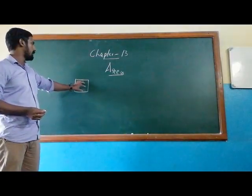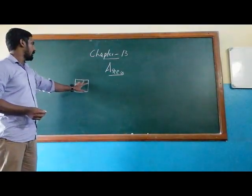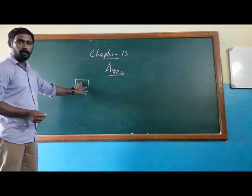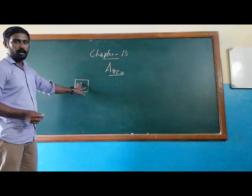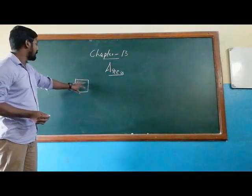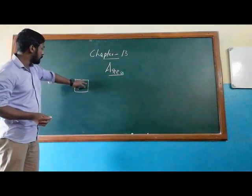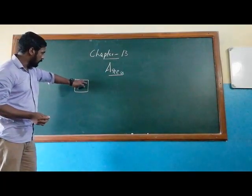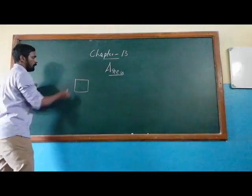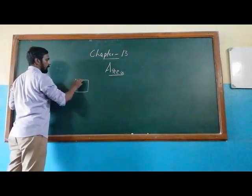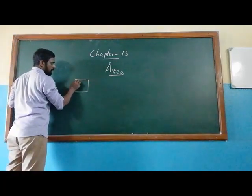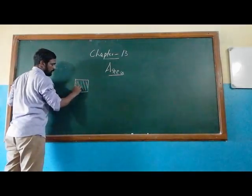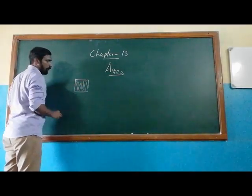This is a square. The space that has been occupied by the square is called the area. So if you see, the area is what this shaded portion is. So this is called an area.